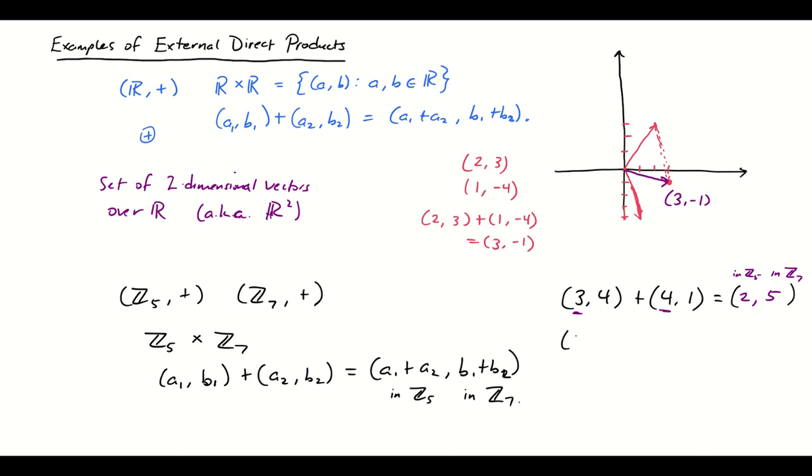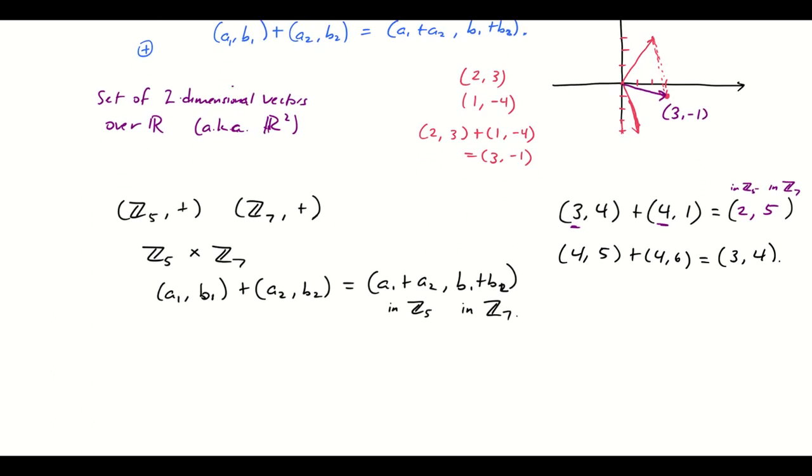Here's another example. Let's say I have (4, 5) plus (4, 6). What would that be? Well, 4 plus 4 is 8. In Z mod 5, that's equivalent to 3. 5 plus 6 is 11, and in Z mod 7, that's equivalent to 4. So those are a couple of addition facts. But now we can do some kind of fun stuff.